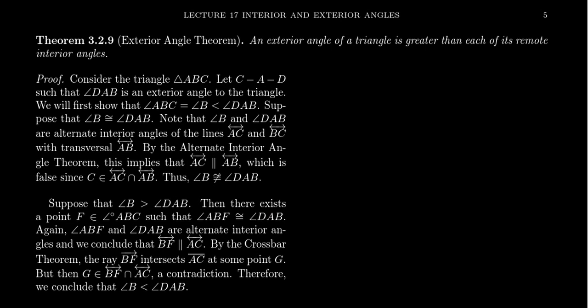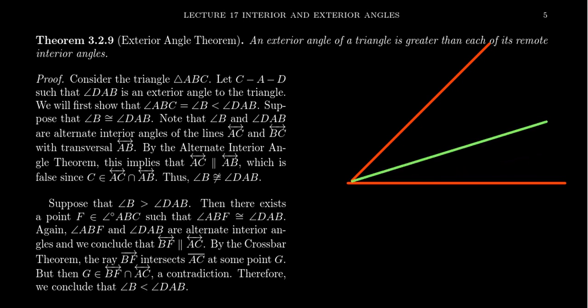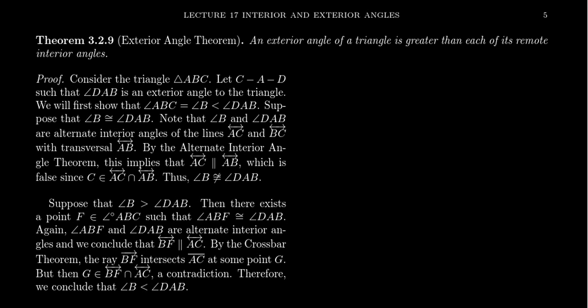Let's make that statement explicit. In a congruence geometry — so we need the axioms of incidence and congruence here — an exterior angle of a triangle is always greater than each of its remote interior angles. We can make sense of what it means to say one angle is greater than another: if we can translate one angle inside of the other, the translated angle is smaller. The proof will use the alternate interior angle theorem, which is why congruence geometry is necessary.